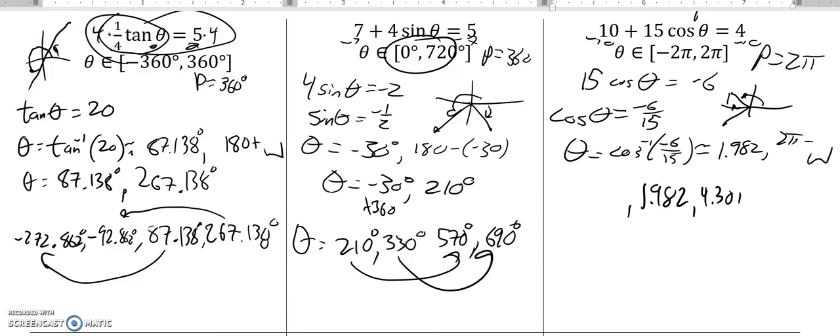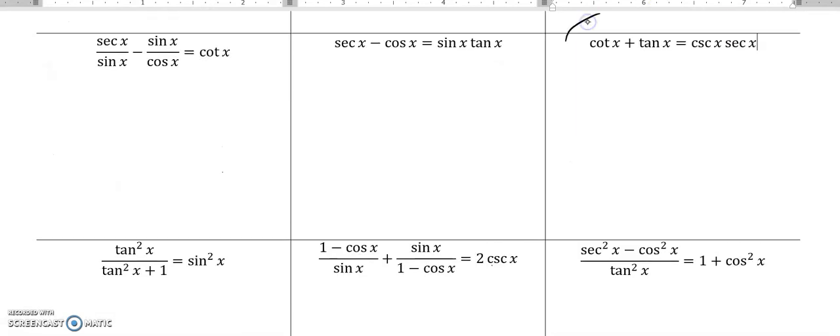And it knows if I add 2 pi to these, I'll be outside of my range. So I'm going to subtract 2 pi from each. Subtract it from that. Subtract it from that. Get my other two values. This one is negative 4.301. This one is negative 1.982. And shove them back in your calculator. Check them. Make sure that they work.